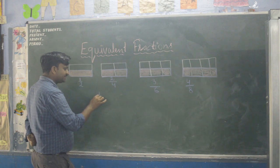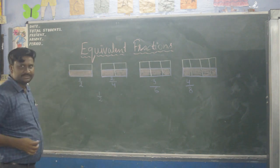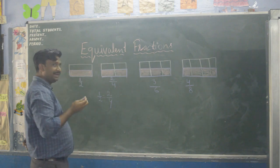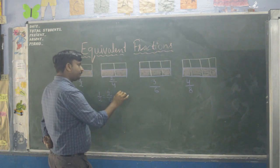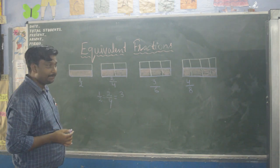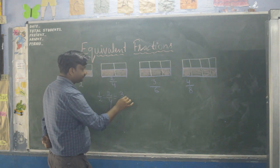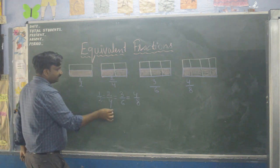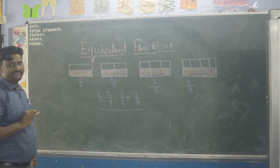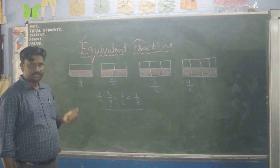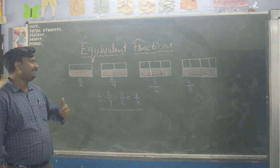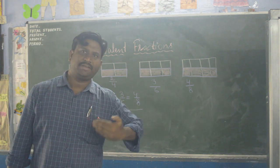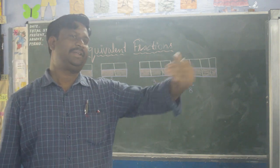If I say shade one upon two, you will shade like this — half. If I say shade two upon four, you will again shade half. If I say shade three parts out of six, you will shade half — and so on. So these fractions are called equivalent fractions. Now the question is: how can we find more equivalent fractions of a given fraction?